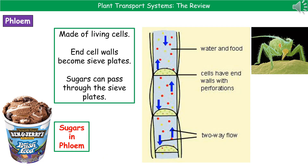The key features of phloem cells: firstly, they're living cells. They've got end walls, but these have been turned into sieve plates. Rather than being a completely solid wall, they have small perforations called sieve plates, which allow sugars to pass through and be transported around the plant. For an easy way to remember that sugar is transported in phloem, think of Ben and Jerry's — fish food ice cream packed absolutely full of sugars, just like the phloem. Both spelled with a good old PH.